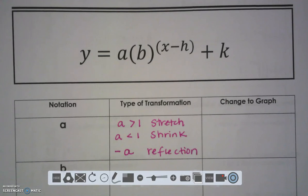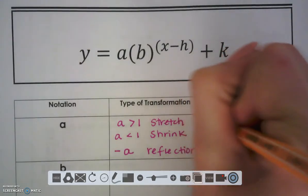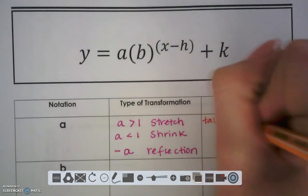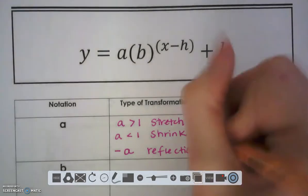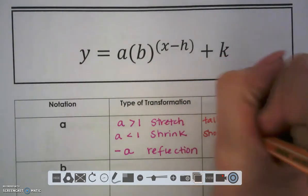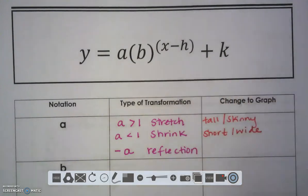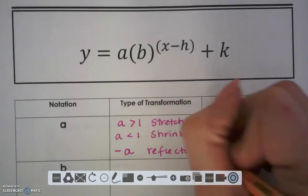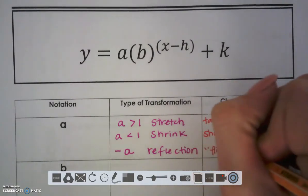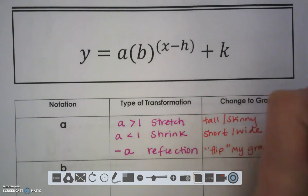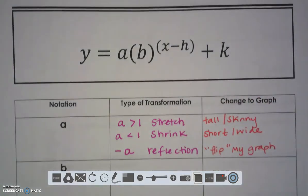So how does this change my graph? When I have a stretch, I'm going to have something tall and skinny. It's going to increase pretty rapidly. If I have a shrink, I'm going to have something short and wide. And when I have this reflection, this is still going to flip my graph. I'm going to flip my exponential function upside down.